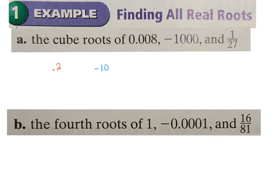For fractions, handle the numerator and denominator individually. The cube root of 1 — any root of 1 is just 1. The cube root of 27: three times three times three equals 27, so the answer is 3. Therefore the cube root of 1/27 is 1/3.